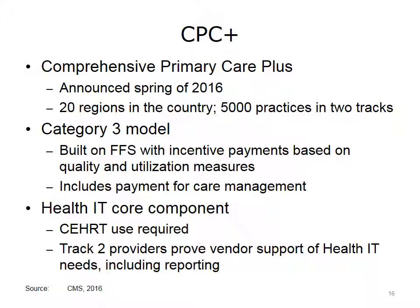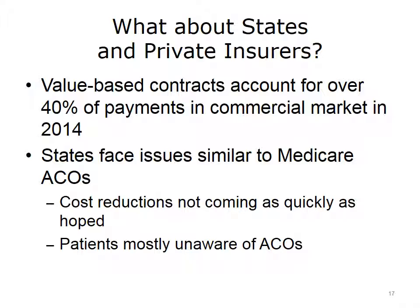CMS may be the largest payer of health care in the U.S., but they aren't the only payer. Therefore, to change the value equation in U.S. health care, it can't be limited to the federal government as a payer. State and private insurers are also rapidly adopting ACO-like models as a way to pay health care providers. In the commercial market, private insurance company value-based contracts cover over 40 percent of payments made. Private insurers are also contracting with their providers in these risk-based contracts, which are based on trying to control costs and achieve quality measures. However, there are issues similar to those the federal government has experienced. First, expected cost reductions are not being realized as quickly as hoped. Second, most patients remain largely unaware of accountable care organizations, and this lack of broad patient understanding has a large effect on the way people in the U.S. consume care.